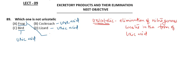The frog eliminates nitrogenous wastes in the form of urea, making it ureotelic. The tadpole — the larval stage of the frog — eliminates wastes as ammonia, making it ammonotelic. The question asks which is NOT uricotelic, so the answer is the frog. Option A is correct.